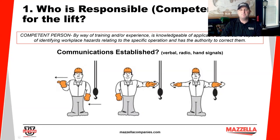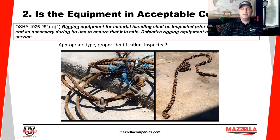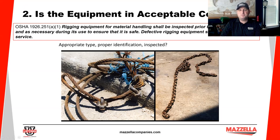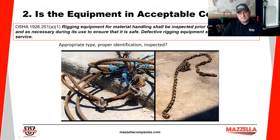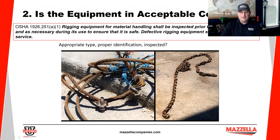Is the equipment in acceptable condition? Is it the appropriate type? Is there proper identification or tagging on these slings or rigging items, and when was it last inspected? We must inspect these items before every use. On the lower left we've got some wire rope with drop-forge clips — a makeshift sling with no tagging, visible rusting, and a snapped piece of wire rope. That is not an acceptable condition; we would not use that for a pick.